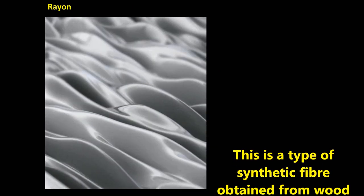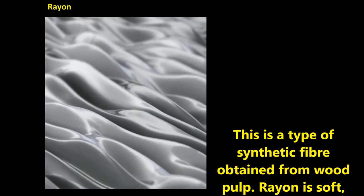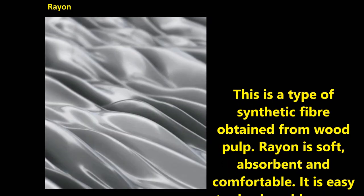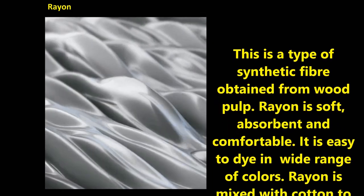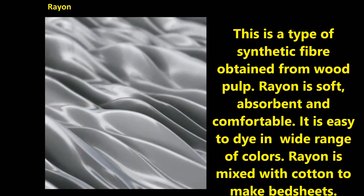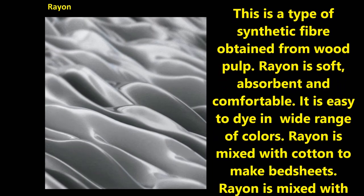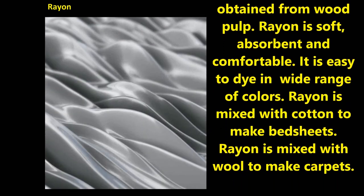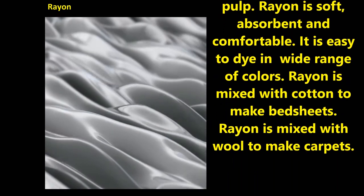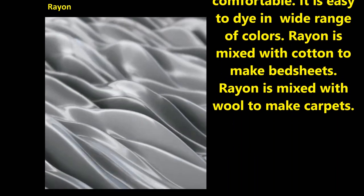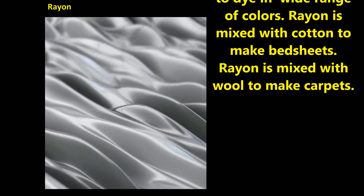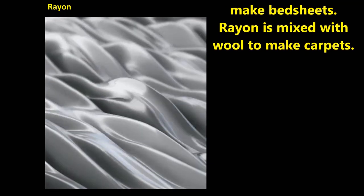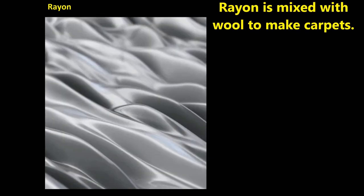Rayon is a type of synthetic fiber obtained from wood pulp. It is soft, absorbent, and comfortable, and easy to dye in a wide range of colors. Rayon is mixed with cotton to make bedsheets, and rayon is mixed with wool to make carpets.